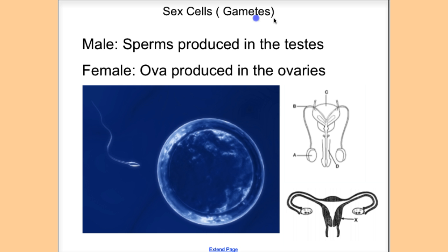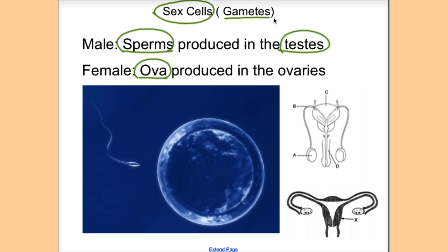Let's talk about gametes. Gametes are also referred to as sex cells, and there are two sets of sex cells in humans. In males they are called sperms, and in females they are called ova, or egg. In males, sperm are produced in the testes, whereas ova, or eggs, are produced in the ovaries. Let's look at a diagram of the male and female reproductive structure.